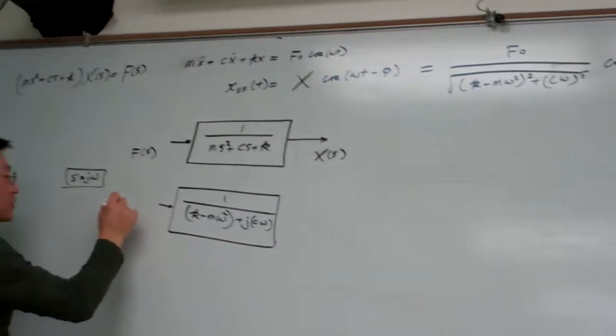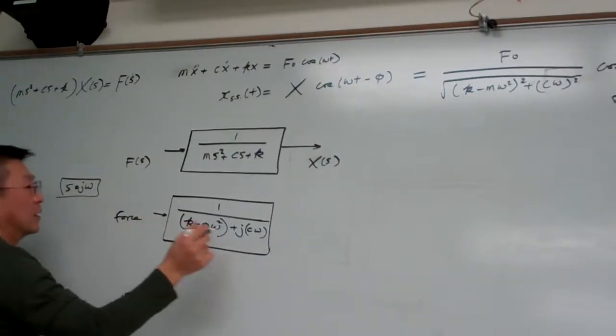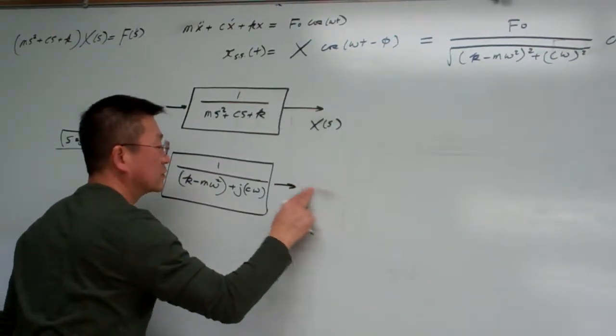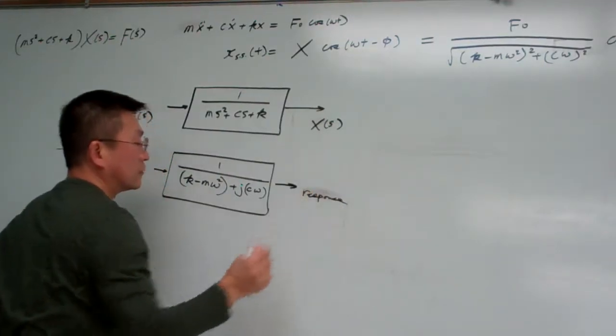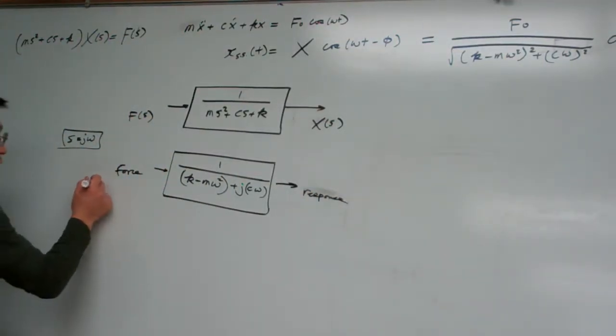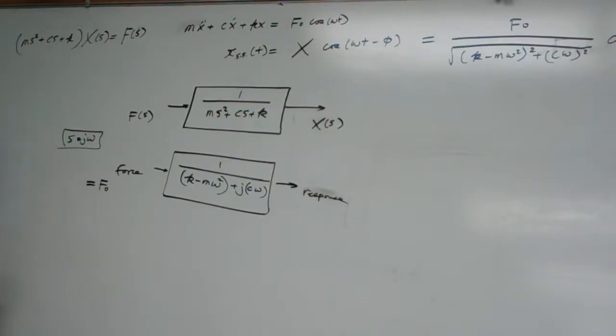So now is our the force, and this is the output response. Okay, so for the force right now we have the magnitude is f zero and what is cosine omega t.